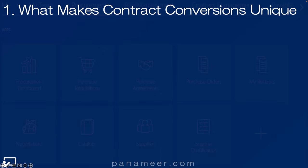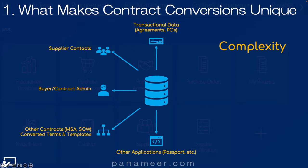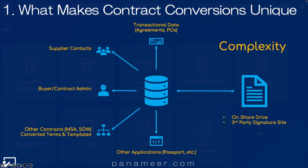Slide one: what makes the contract conversion unique? In short, it's the complexity. Contracts are linked to more data elements, multiple of which need to be converted first. POs are typically the hardest conversion for similar reasons. Contracts can link to more sets of data, to other contracts, and to other PDF contract documents.